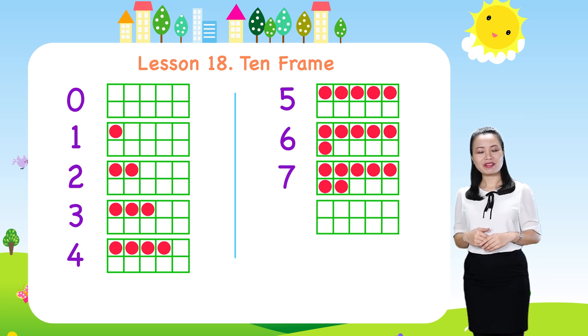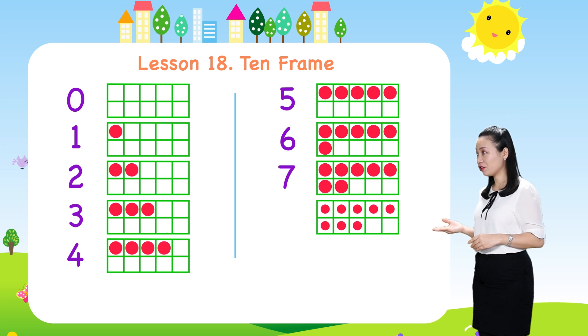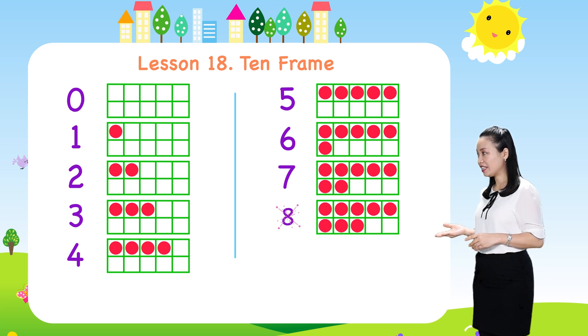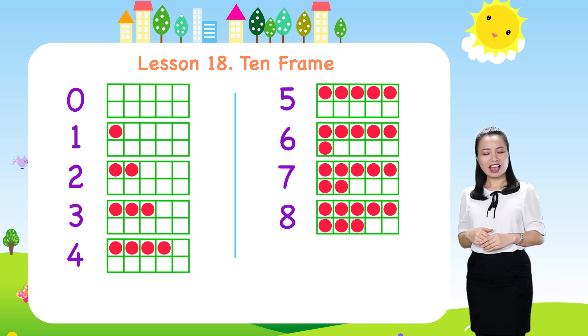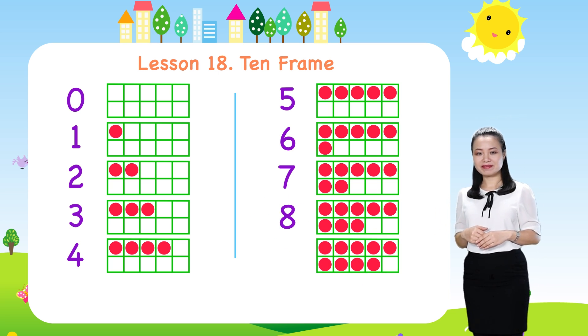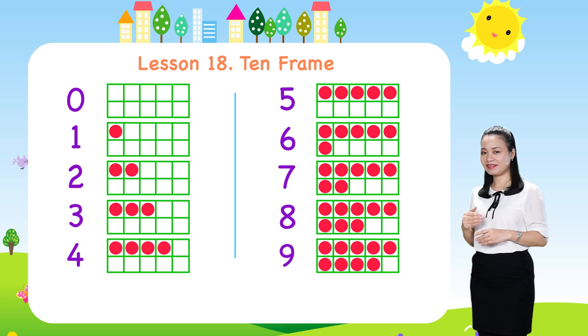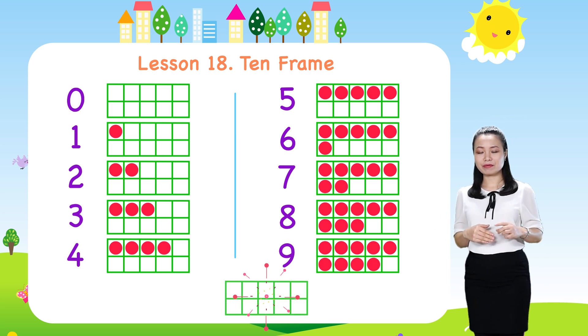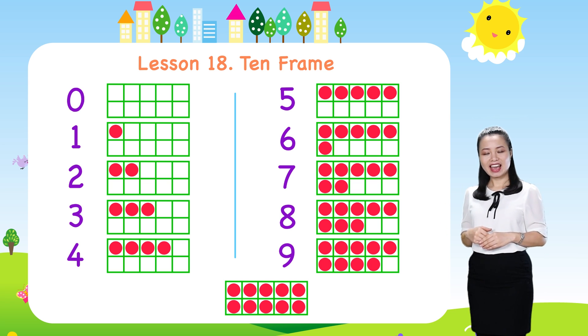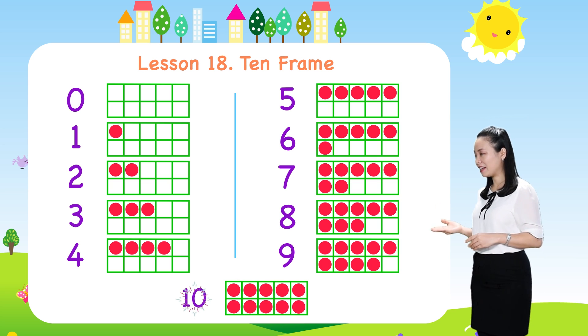If there are seven dots in the frame, it represents number seven. If there are eight dots in the frame, it represents number eight. If there are nine dots in the frame, it represents number nine. If there are ten dots in the frame, it represents number ten.